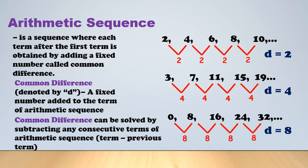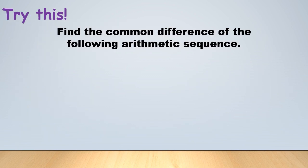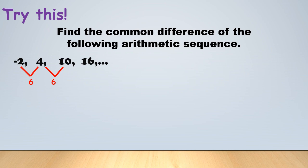If it has no common difference, then it is not an arithmetic sequence. Let's practice finding the common difference. For the sequence -2, 4, 10, 16: subtract 4 minus (-2) = 6, 10 minus 4 = 6, 16 minus 10 = 6. Therefore the common difference is D = 6.